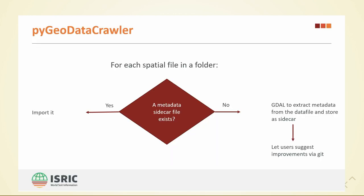The PyGeodata crawler runs on a folder of files. When you start a new project, you get some data from a customer and you run the tool just to see what's in that folder. If there's metadata, you import it. If there's no metadata, it will use GDAL to fetch metadata from that file. Then users can suggest additional metadata via Git pull requests.